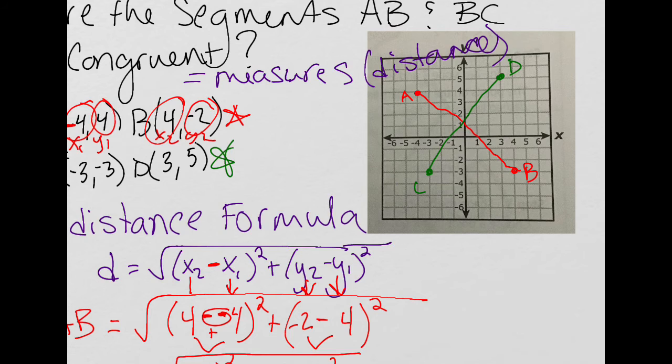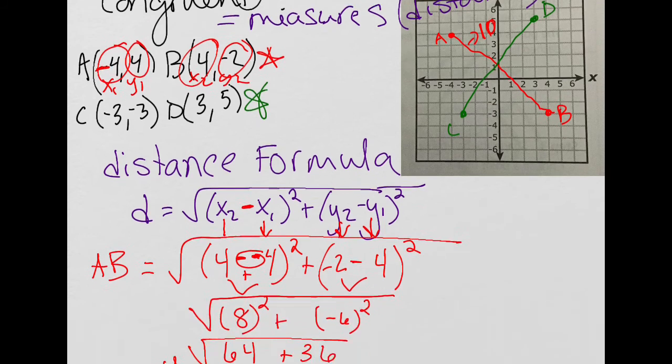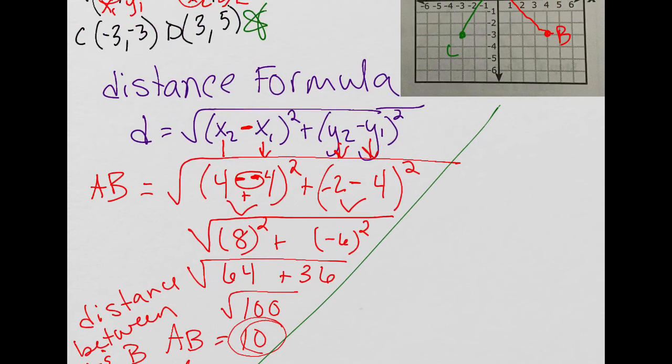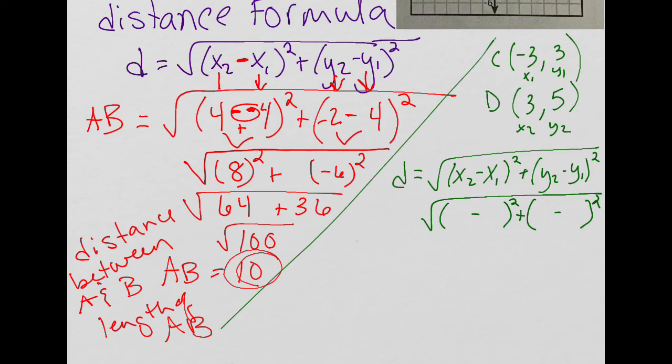So now that I know AB has a measurement or length of 10, I want to do the same process with CD to see its distance or length. I'm going to rewrite those points so that I can move my screen down. Okay, so I'm going to go ahead and label X1, Y1, X2, Y2. And then the distance formula. I like to write it down, what I call the bones, so the minuses, and then I can plug in the numbers.